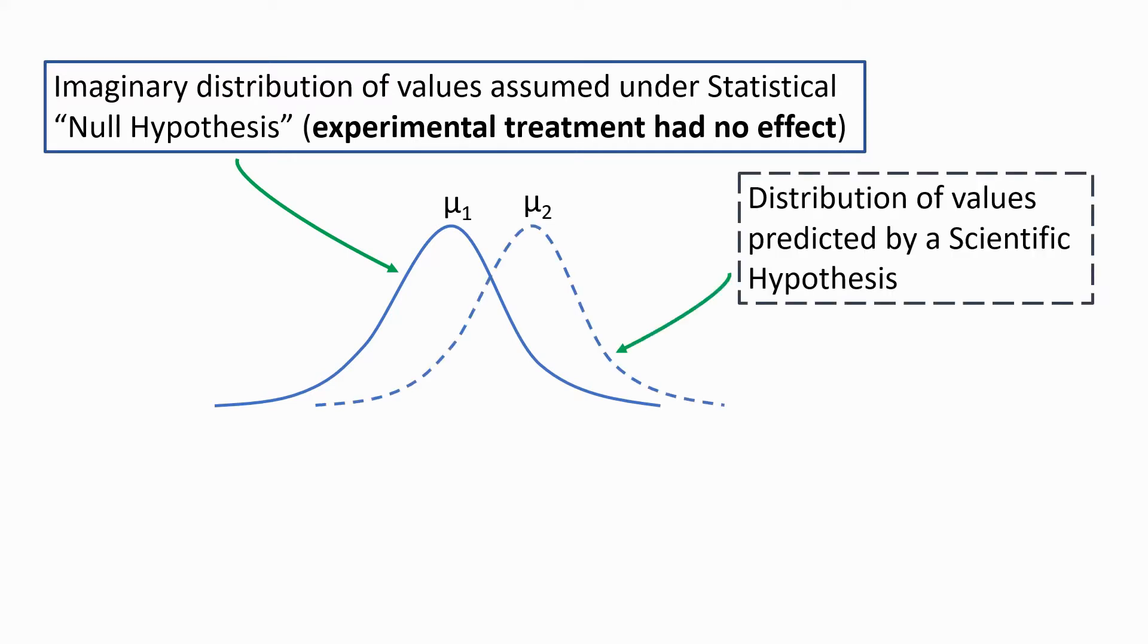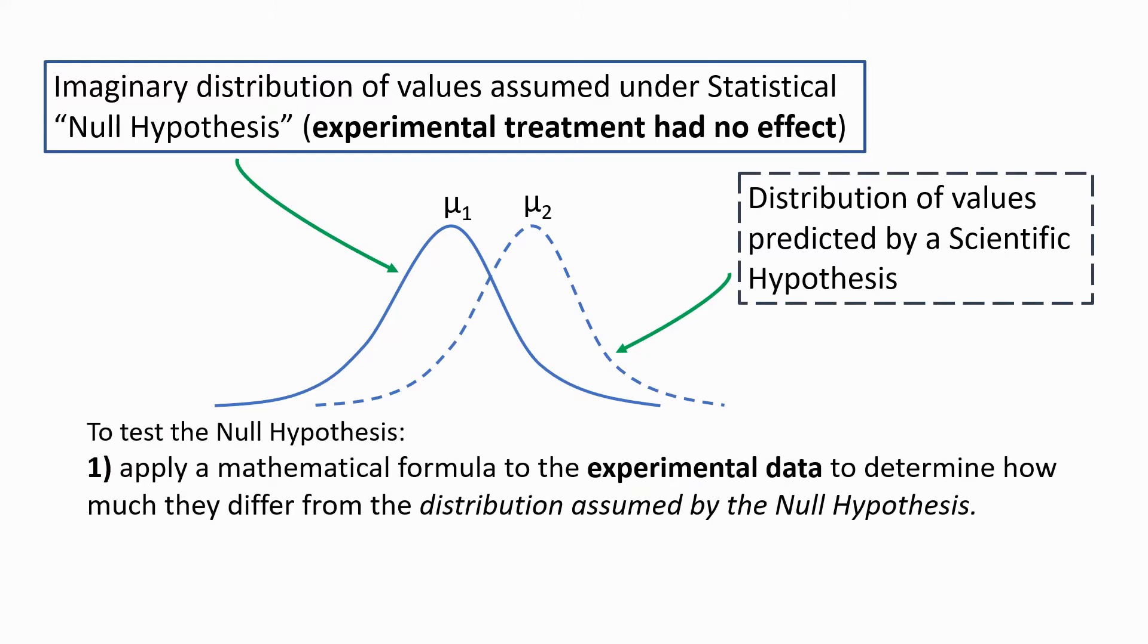Now our scientific hypothesis might make the prediction that the distribution of values under our experimental treatment will look more like this distribution with a mean of mu 2. To test the null hypothesis, we apply a mathematical formula to the experimental data to determine how much they differ from the distribution assumed by the null hypothesis.